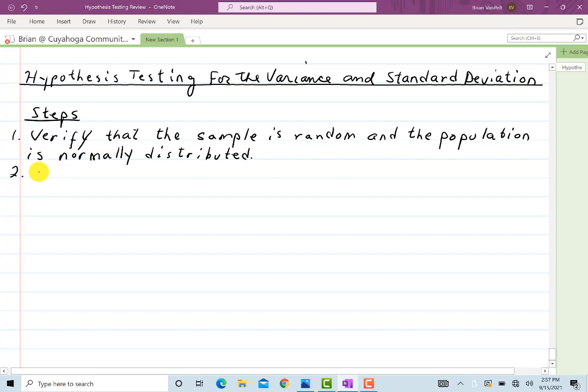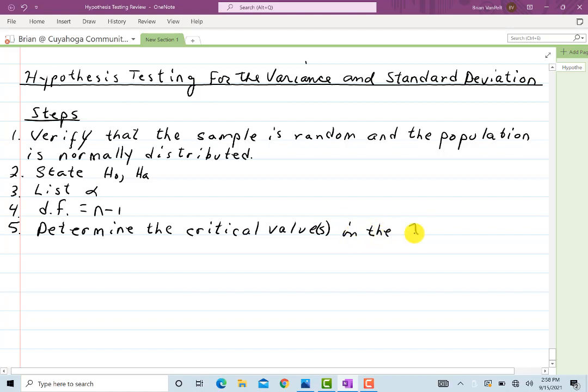Step two, we do as usual state H naught and HA, list the level of significance. In this we're going to make use of degrees of freedom again and it will also equal n minus 1. Determine the critical values in the chi-squared table. The test statistic will be the following.